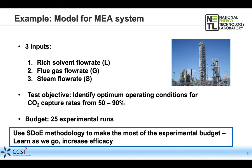The example we're working with is a model for an MEA system with three inputs: rich solvent flow rate, flue gas flow rate, and steam flow rate. Our test objective is to identify optimum operating conditions for capture rates from 50 to 90 percent. We have an experimental budget of 25 runs, but rather than use them all at once, we want to use the sequential design of experiments methodology to make the most of that budget by splitting the problem into stages to learn as we go.